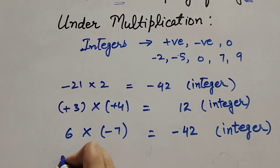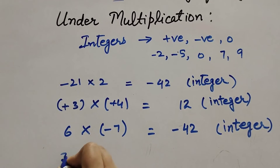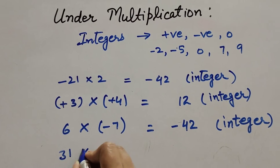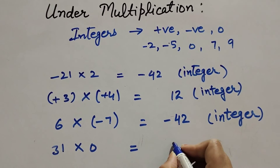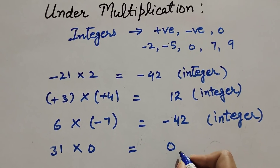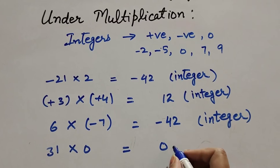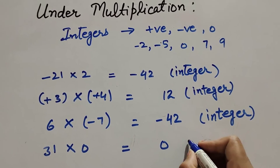Let us take one more example. We have integer thirty-one and zero. Thirty-one multiplied by zero gives answer zero. So zero is also an integer.